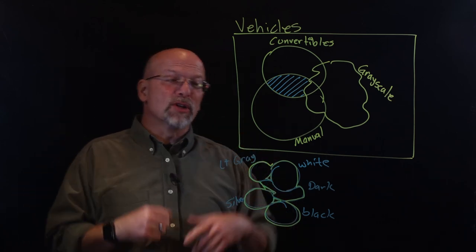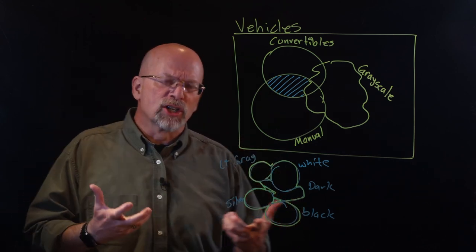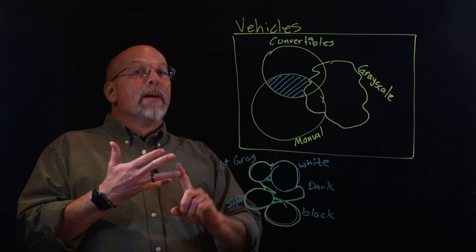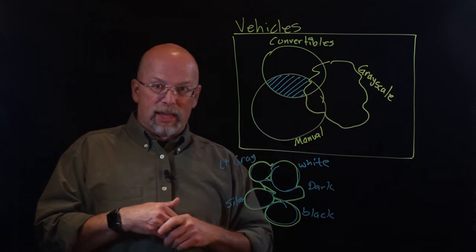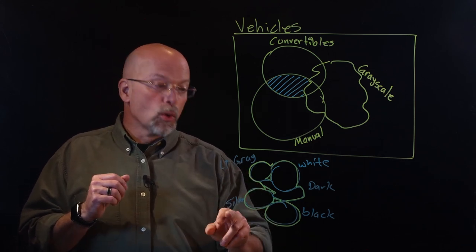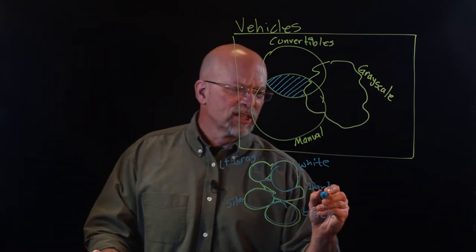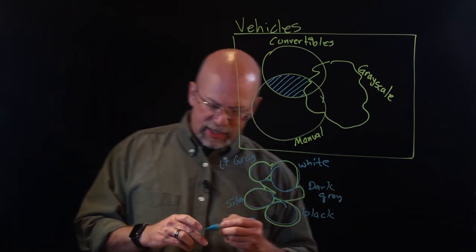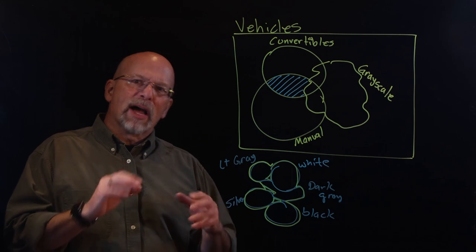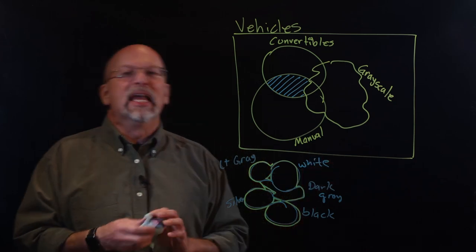One of the things you may have noticed in this discussion was the inclusion of words referred to as conjunctions. I want a convertible and a manual transmission in this car, but I don't want the grayscale. And the grayscale would be something that is either light gray, or silver, or black, or dark gray, or white. So we've got a lot of these conjunctions — these ands, ors, buts, nots. Let's talk about the terminology and equations we're going to use to represent this kind of theory in discrete math.